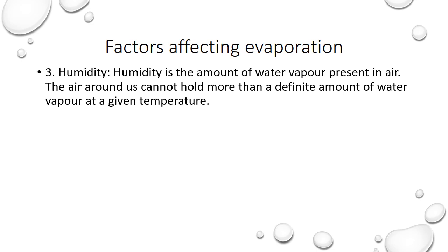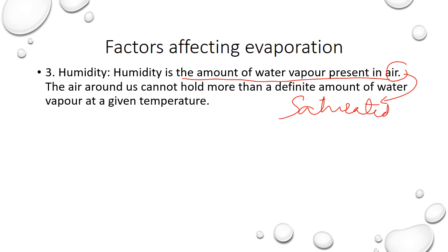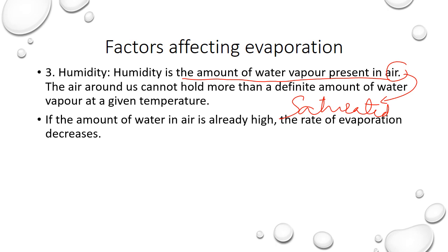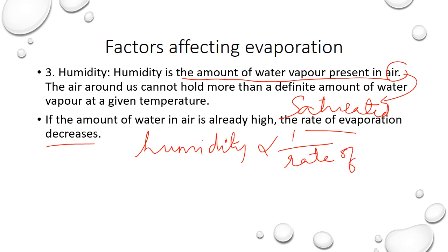The third factor is humidity. Humidity is the amount of water vapor present in the air. Whenever we say it is very humid, that means there is too much water vapor in the air. If the air is already saturated with water vapor, the air cannot hold on to extra vapors — the capacity of the air to take up more vapors is less. So the rate of evaporation will decrease. If the humidity is high, the rate of evaporation decreases, so they are inversely proportional.